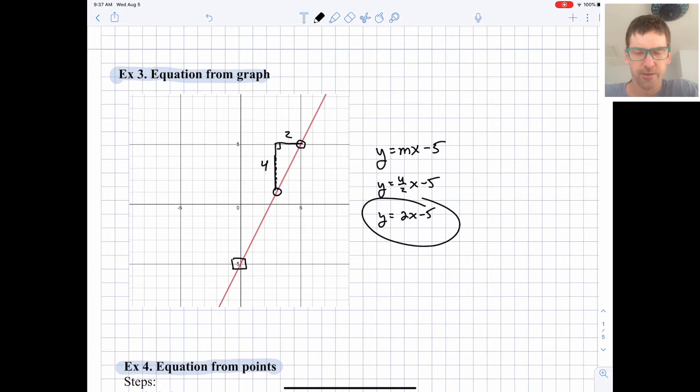So we have a starting value of negative 5 and a slope of 2 or a change of 2. Meaning that every time x goes over by 1, y goes up by 2. Over 1, up 2. Over 1, up 2. Over 1, up 2. Alright.